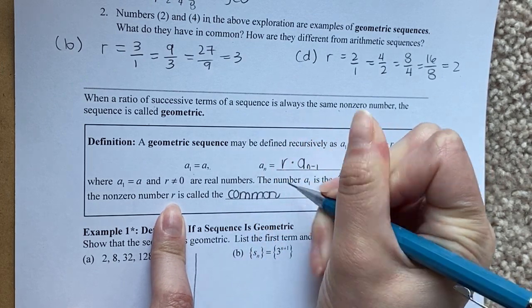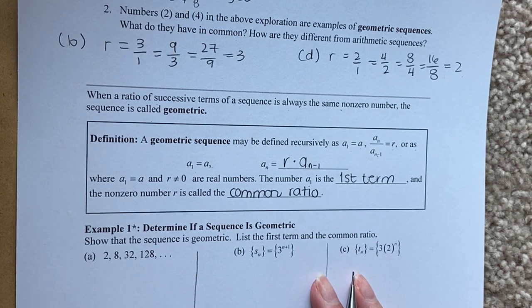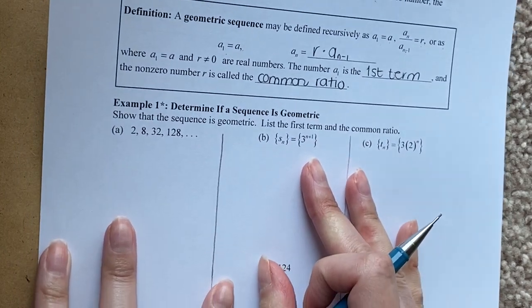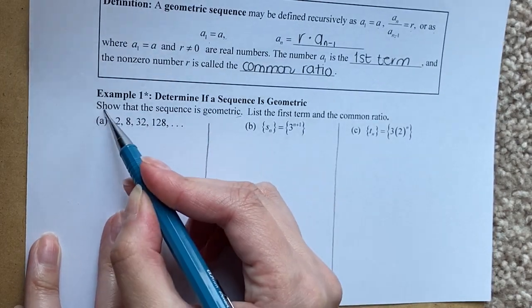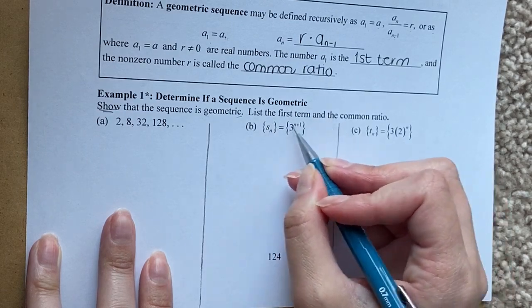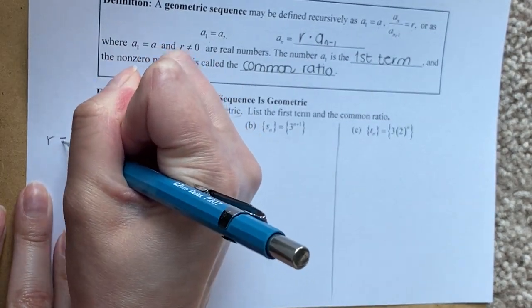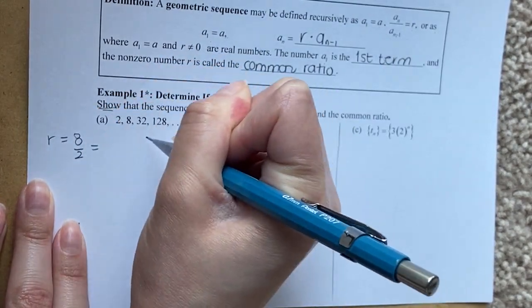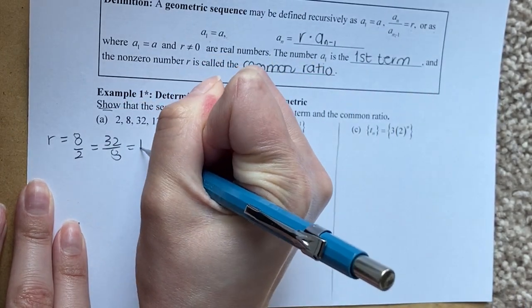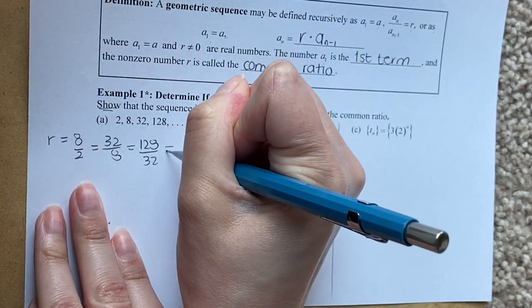Remember, you are going to see this if you take Calculus BC or Calculus 2. Let's see more examples. To show that a sequence is geometric, you need to determine the common ratio. If it's geometric, you need the common ratio: the second term divided by the first one, the third divided by the second, and so forth. The common ratio here is four.